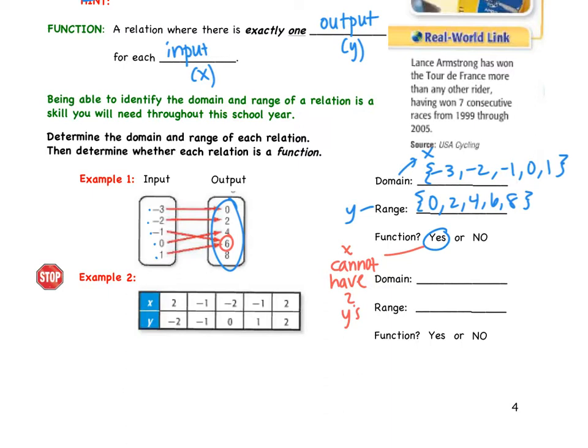Okay, so then if we look at the next example, example 2, our domain, again, is our x's. In this case, the top row. So we have 2, negative 1, negative 2, negative 1, and 2. In this case, negative 1 is repeated, so we don't really need to write it twice. Our range is all of those y values. So negative 2, negative 1, 0, 1, and 2. If you can't make those brackets perfectly, that's okay. Just get as close to them as you can.